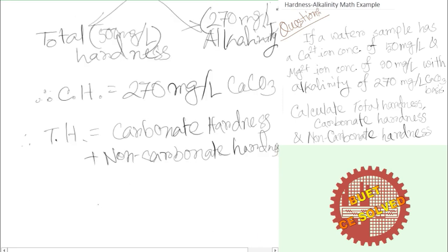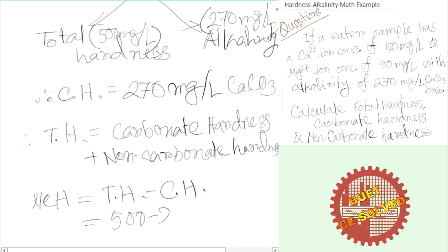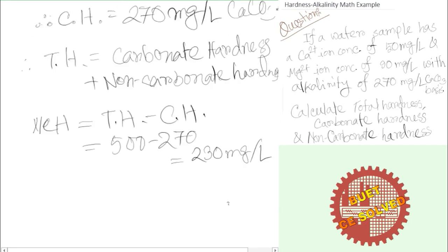Therefore, non-carbonate hardness equals total hardness minus carbonate hardness: 500 minus 270, which equals 230 mg/L as calcium carbonate.